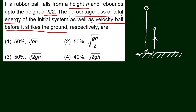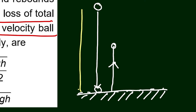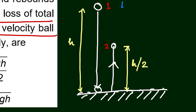It goes back up to a certain height. Let me zoom in and explain properly. From the initial point down to the ground, this distance is small h as given in the question. After striking, the ball returns from ground to half the height — that is h/2. We label the initial position as position number 1 with energy E1, and the final position (height h/2) as position number 2 with energy E2.